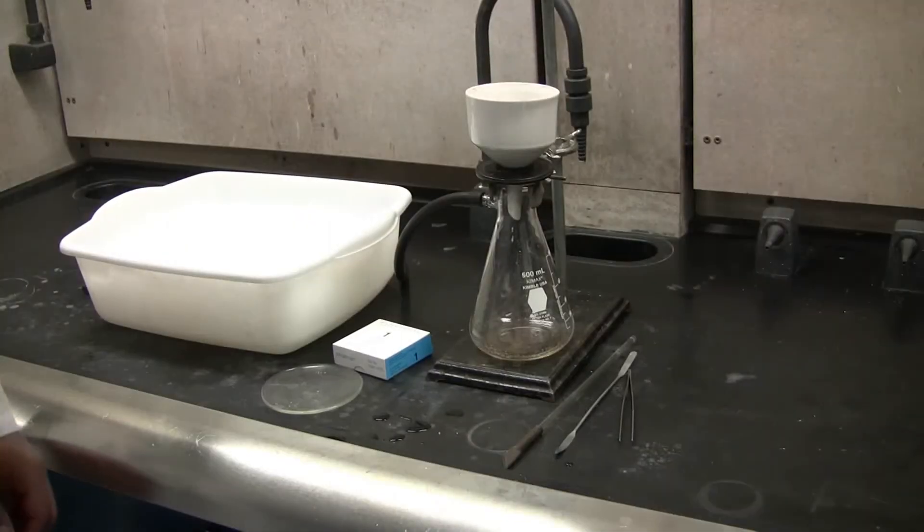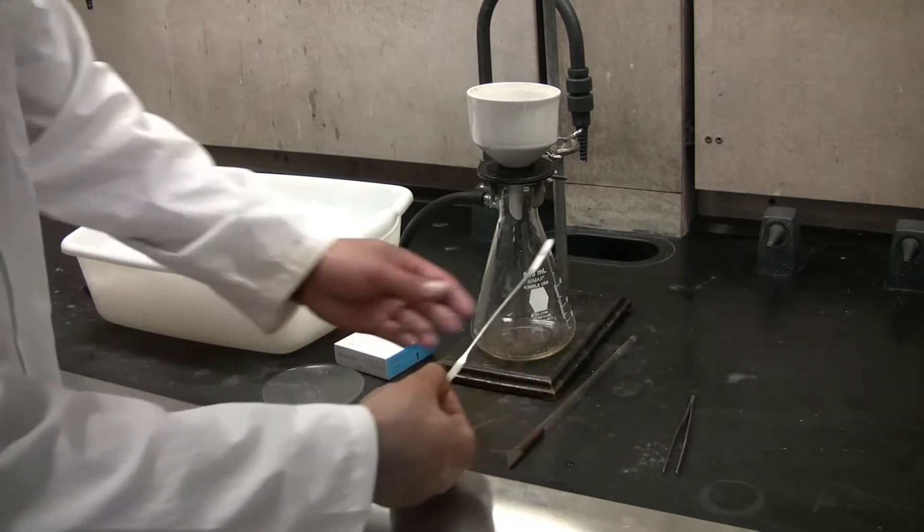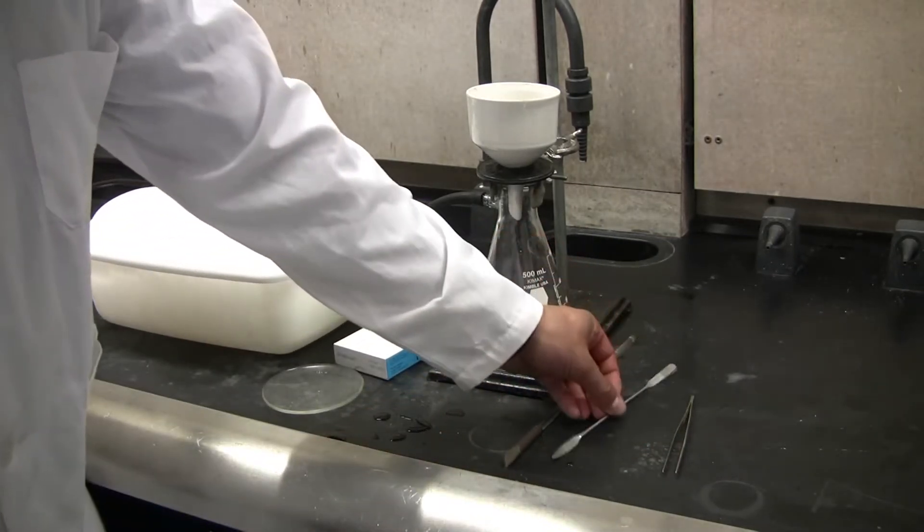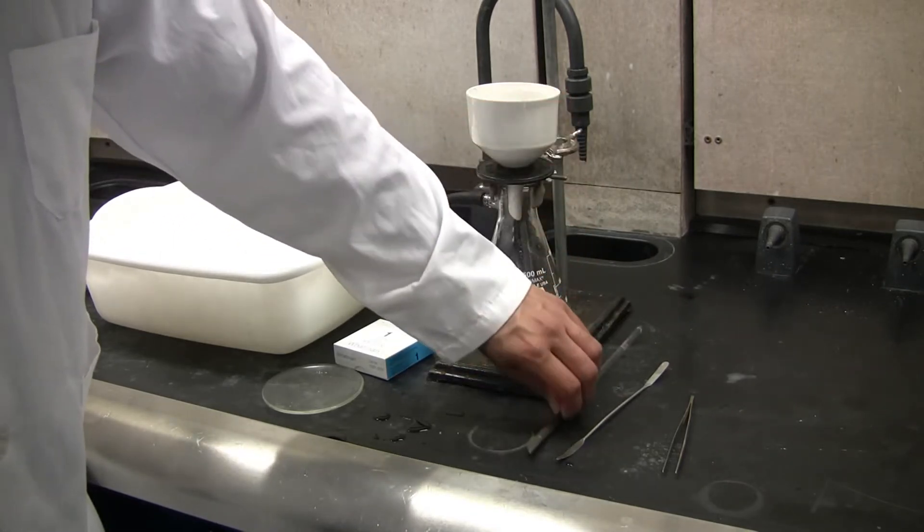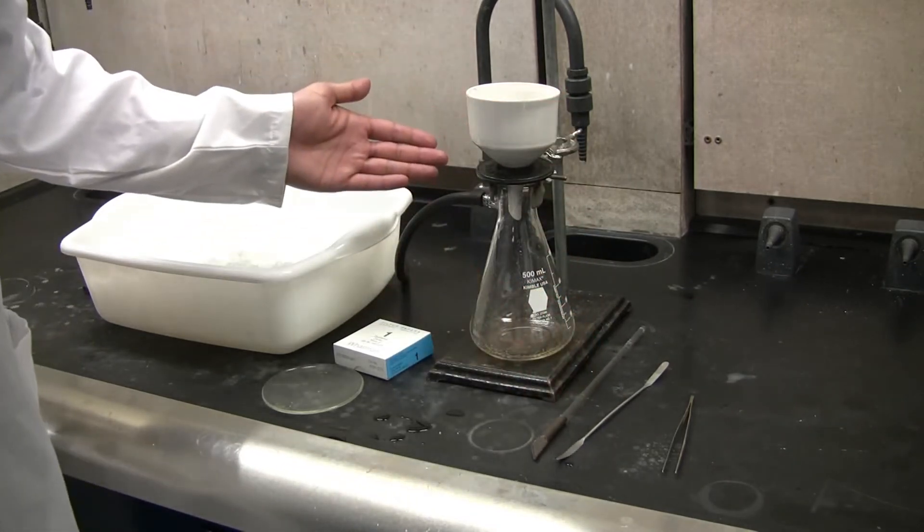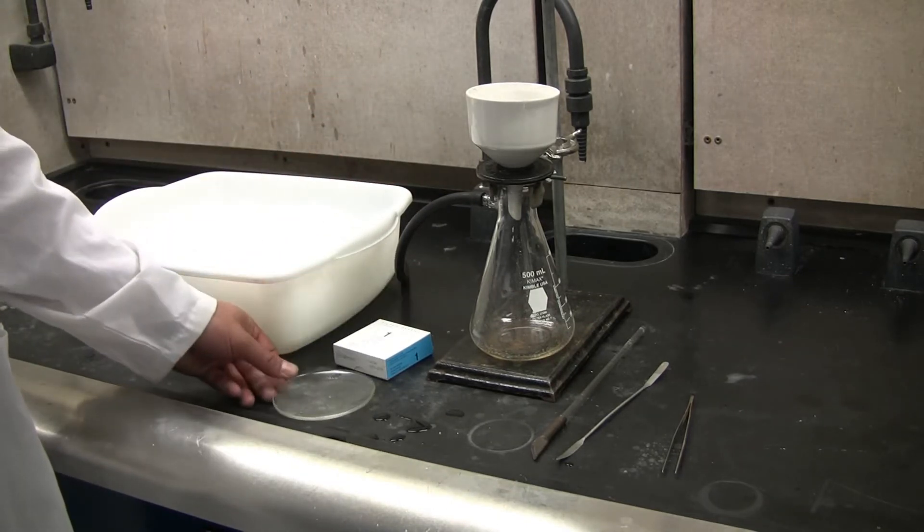In addition, you will need Tweezers, a Spatula, a Glass Stir Rod with Rubber Policeman, the Buchner Funnel Filtering Apparatus, a Watch Glass, and Filter Paper.